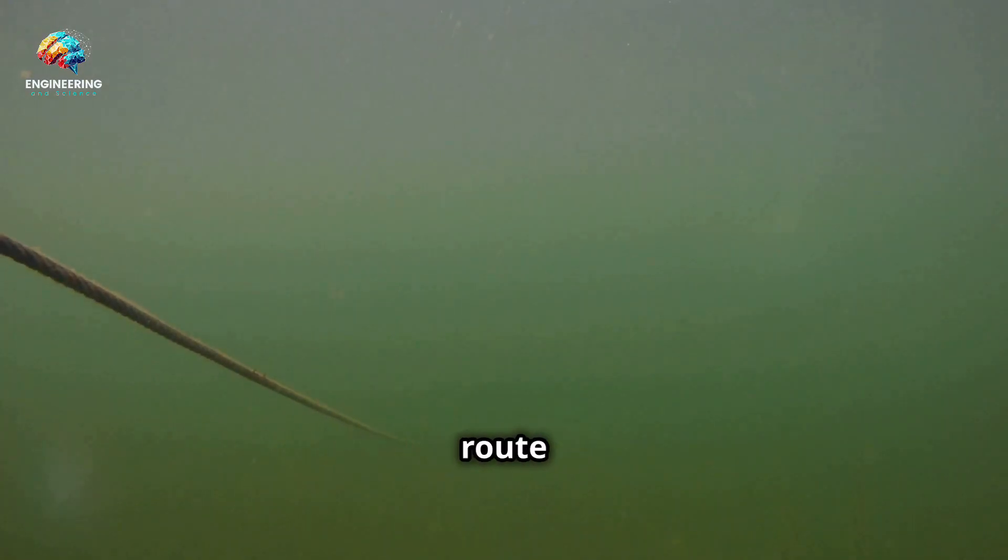Once a general route has been identified, remotely operated vehicles, or ROVs, are deployed to conduct a more detailed survey. ROVs are equipped with high-resolution cameras, sonar, and other sensors, allowing them to create a three-dimensional map of the seabed.